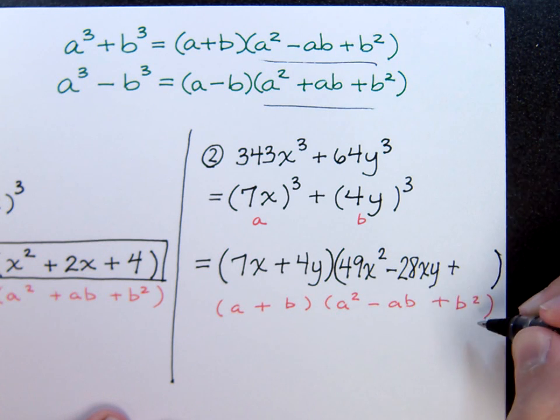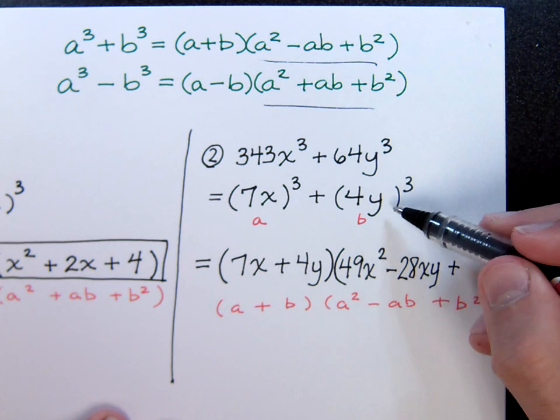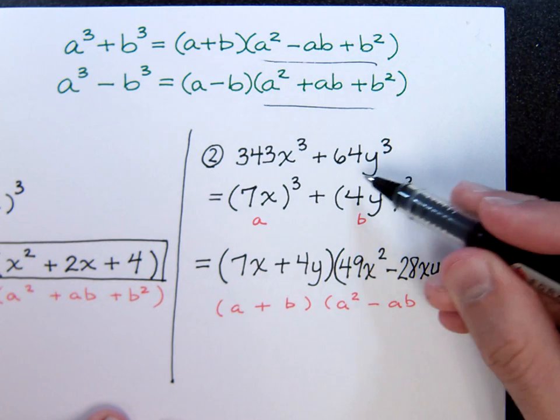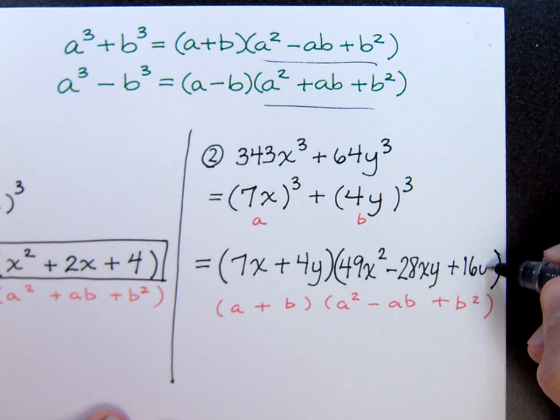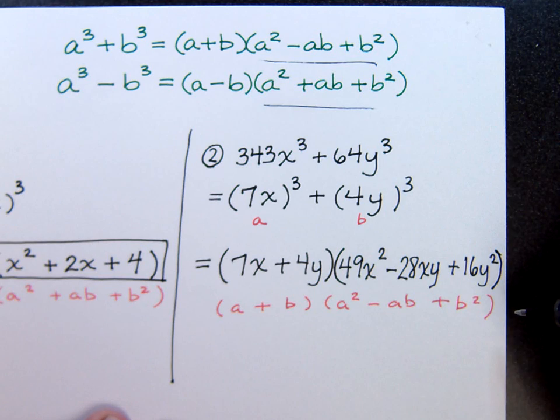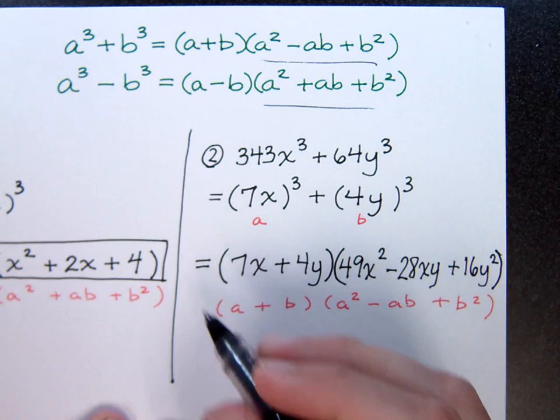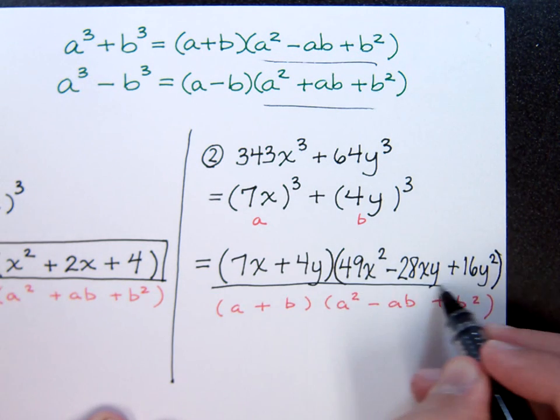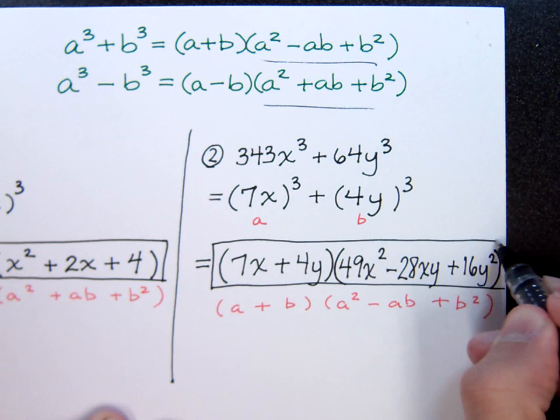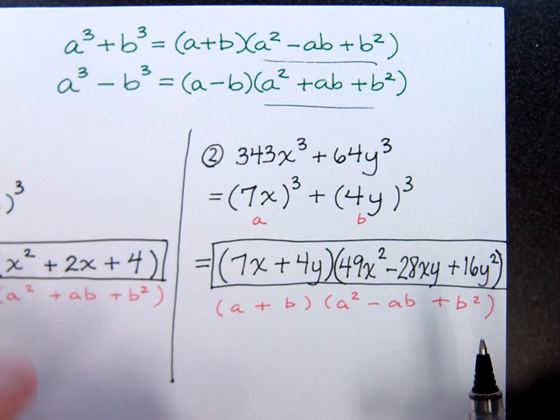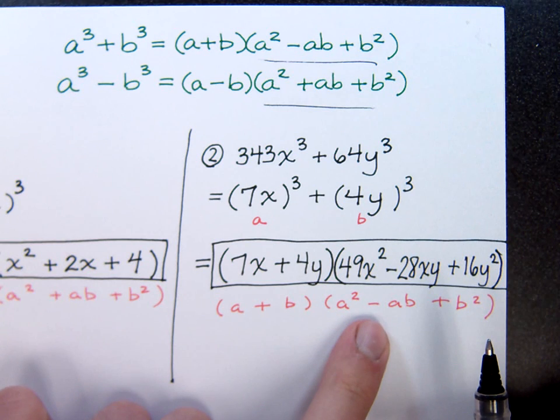Finally, I have to put in b squared. Since b is 4y, I have to square that whole thing. So that's going to end up being 16y squared. So there you have it. You just need to memorize these formulas so that when you see a sum or a difference of cubes, you just write the formula down, and you plug into it.